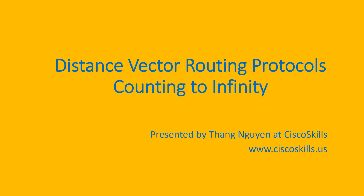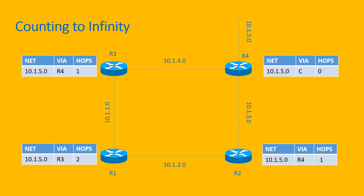In this section we will talk about counting to infinity in distance vector routing protocols. Split horizon will break the loop between neighbors by preventing a router from advertising the routes it learns from an interface back to that same interface. However, it will not stop the loop in this network diagram.